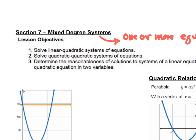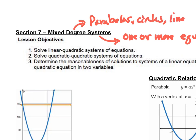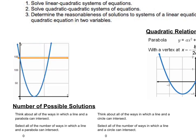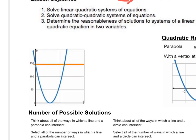When we talk about mixed degree, we're talking about parabolas, circles, and lines intersecting. Typically when you have just two lines, they intersect twice or once. But when you have something like a parabola and a line, you can find their intersection points at two different locations.